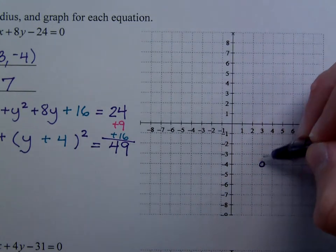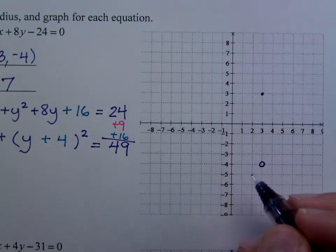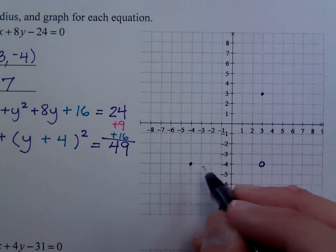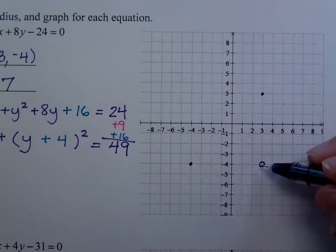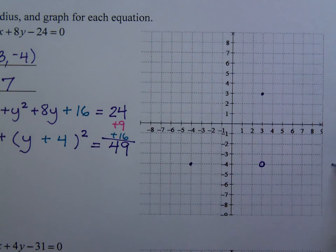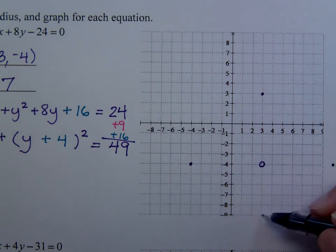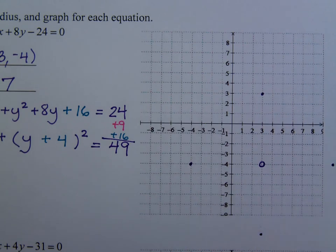So go 7 units up. Go 7 units to the left. Go 7 units to the right. So this is 6, 7 is going to be somewhere right about there. 7 down, so it's 5, 6, 7, something kind of like that.